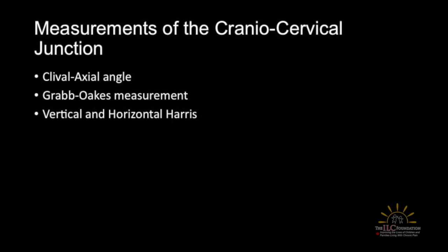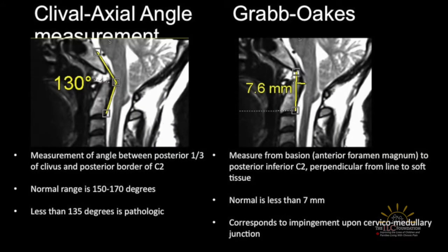There are three metrics typically used for the cranio-cervical junction — that's the skull base and the first two segments of the neck. First is the clivo-axial angle. We draw it from the skull base. There's a hole through which nerves pass — the brain stem — called the foramen magnum, the big hole. And this is the odontoid in C2, the second cervical vertebral body.